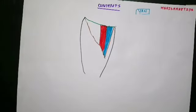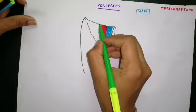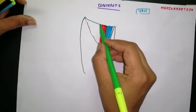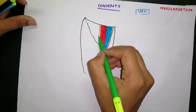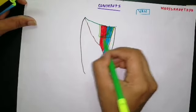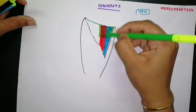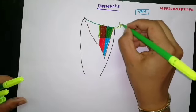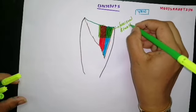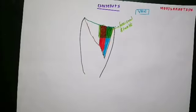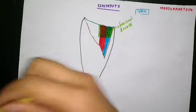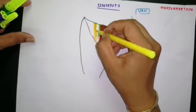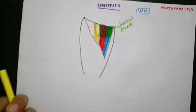The femoral vein and femoral artery are enclosed in a fascial sheath which is an extension of the two layers of fascia of the abdomen. This fascial sheath is known as the femoral sheath, which covers the upper four centimeters of the femoral vein and the femoral artery. Lateral to the artery, we have the femoral nerve and its branches.